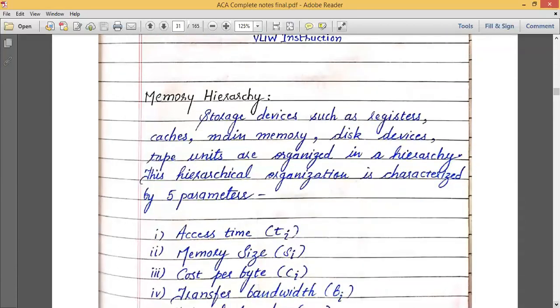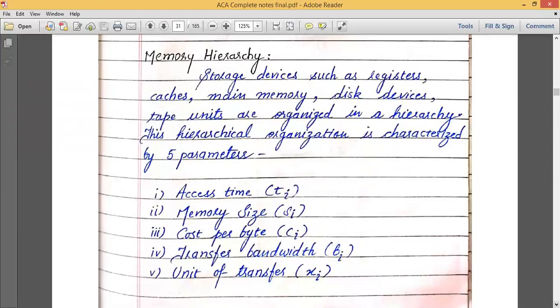Now the next main topic of this unit is memory hierarchy. Every machine which we are using follows a memory hierarchy. Whatever storage devices you are using in that machine—like register, caches, main memory, disk devices or tape units or anything which stores some data—comes under memory hierarchy. It should follow the rules of memory hierarchy and be organized in a hierarchical form. Because if it does not follow this hierarchy, that machine will not work. This hierarchical organization is characterized by five parameters. If we are using a storage device, that storage device should be arranged in a hierarchy and follow the rules of that memory hierarchy, characterized by these five parameters.